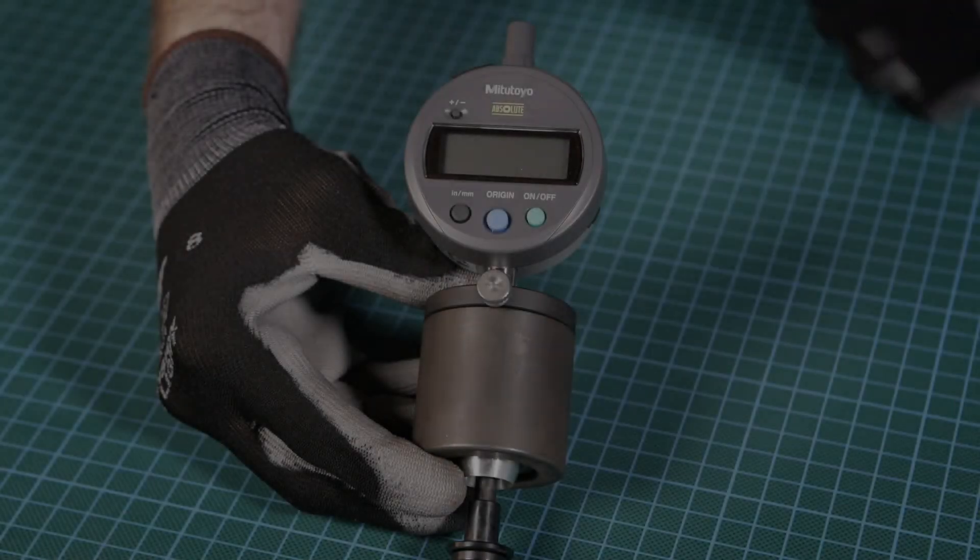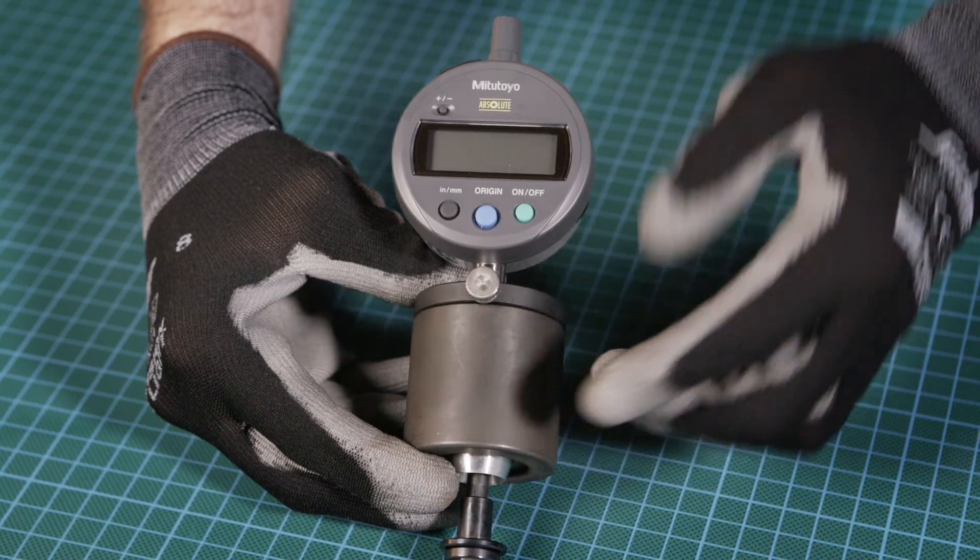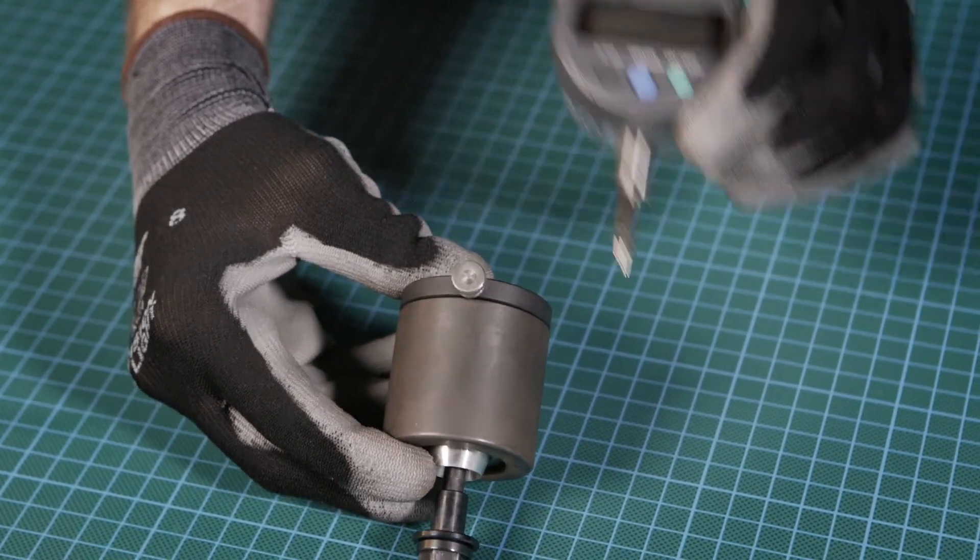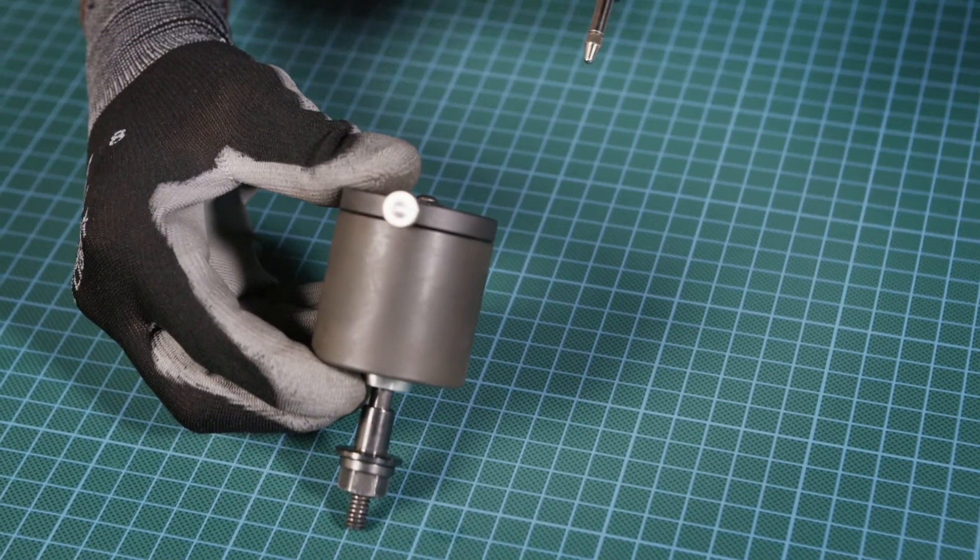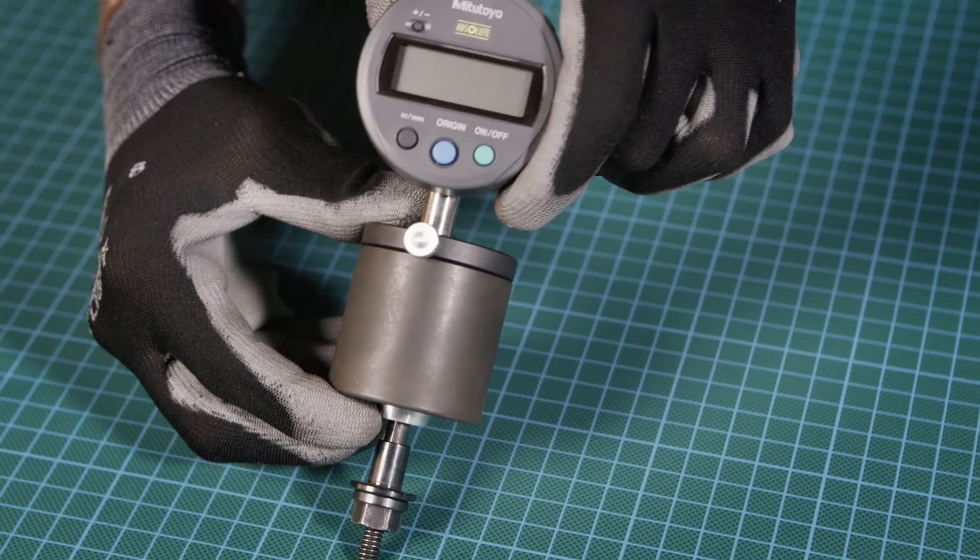When modifying the DTI assembly, loosen the thumb screw which releases the DTI gauge. Then assemble the gauge onto the desired assembly. Make sure the gauge head is fully inserted before tightening the thumb screw.